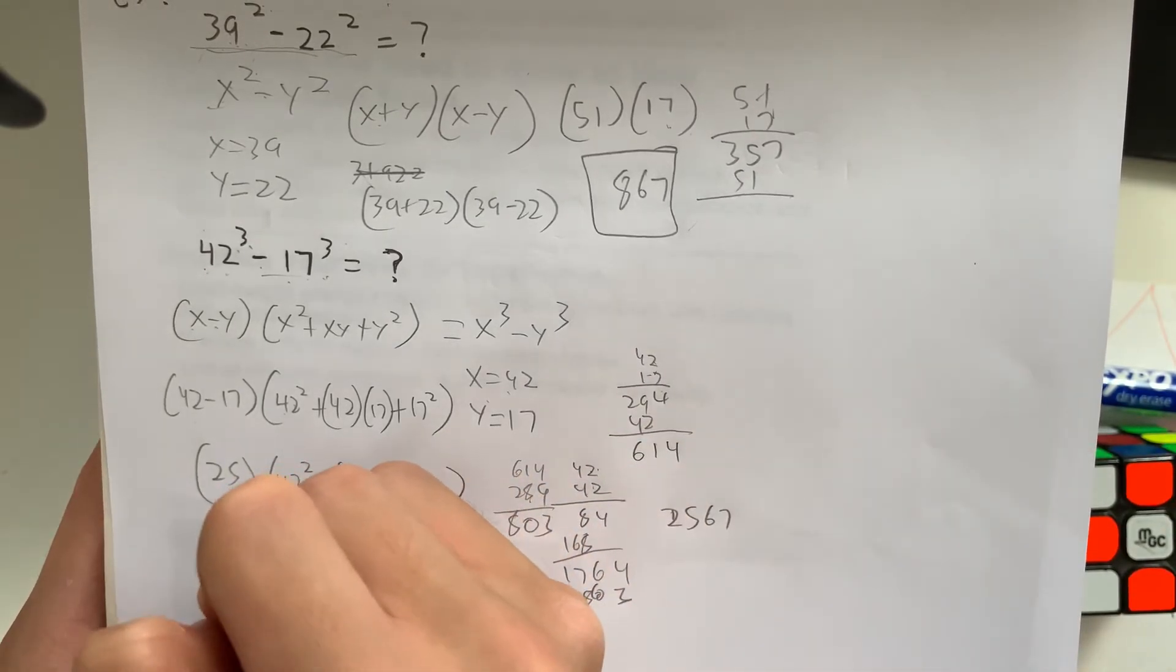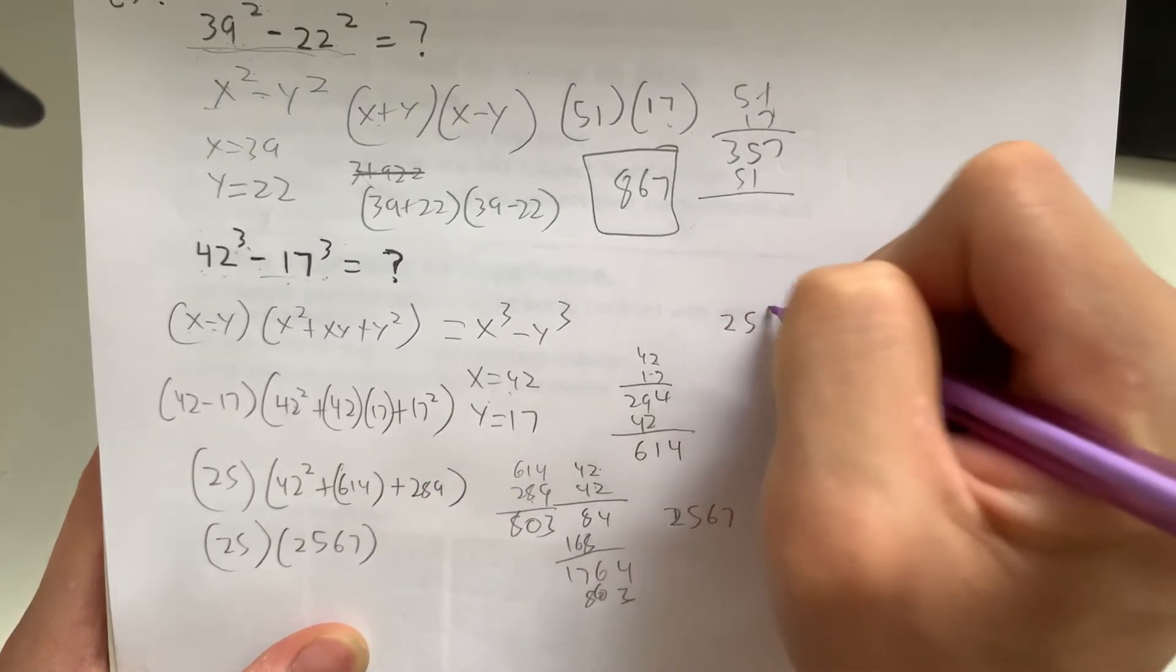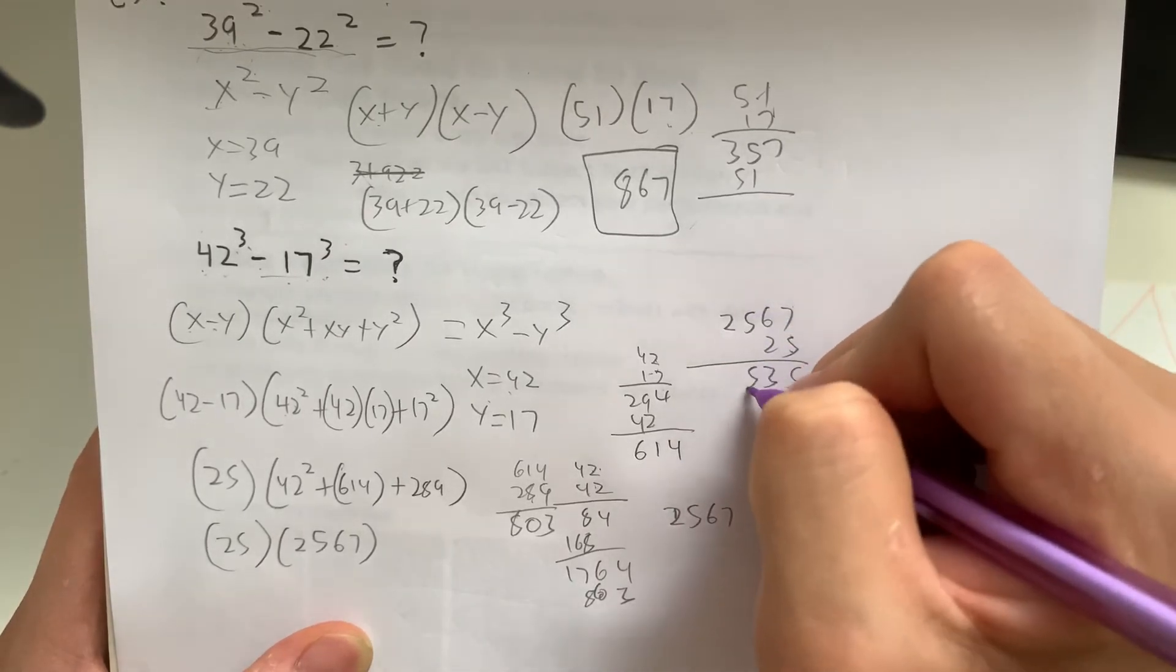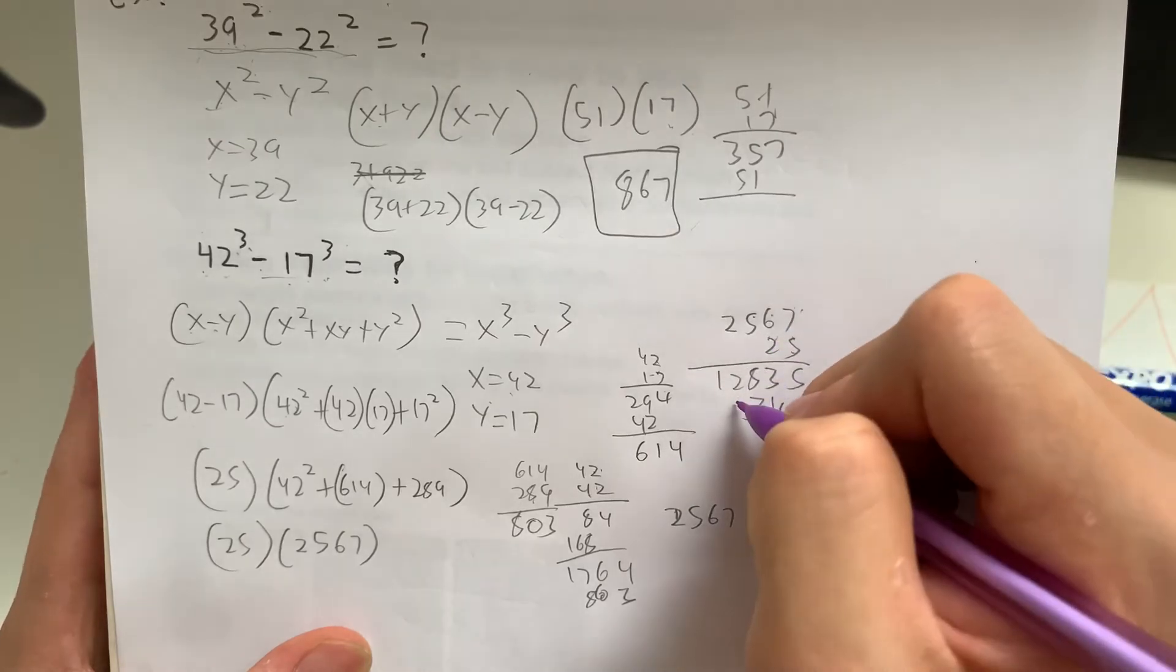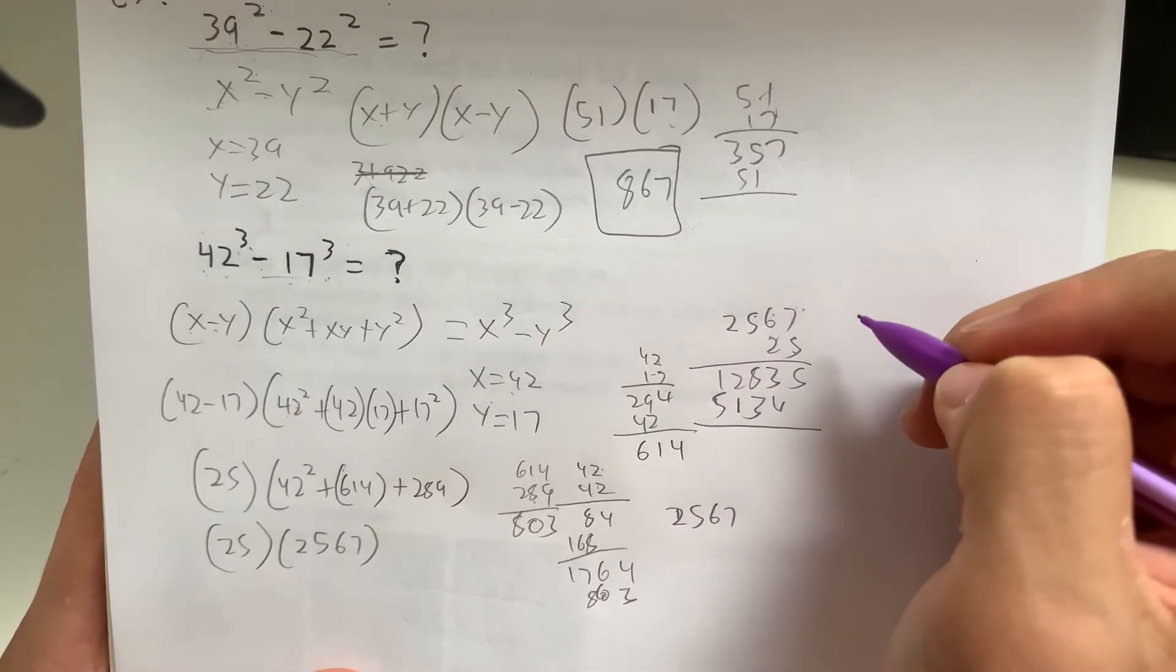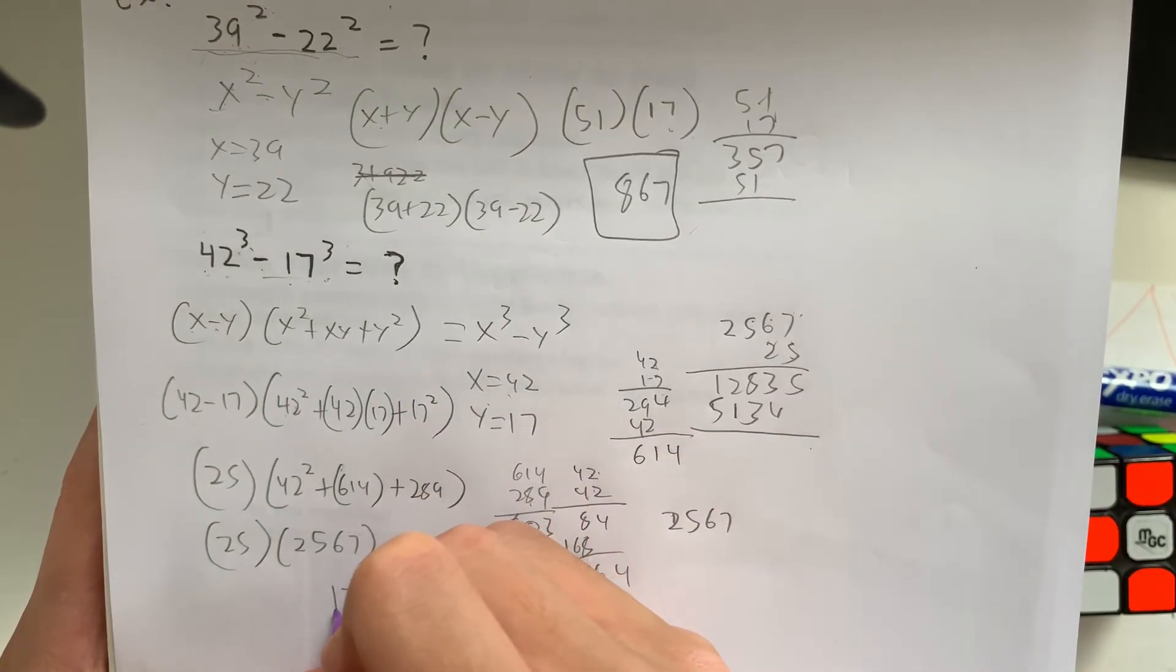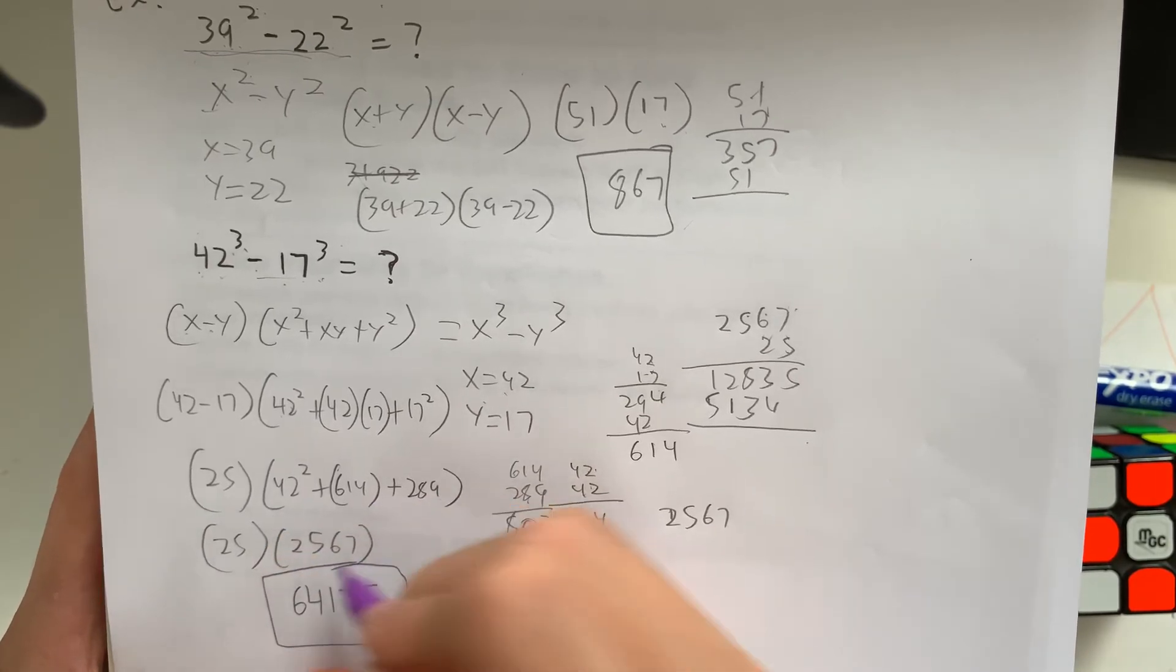So that equals 25 times 2,567. So what's that equal to? 35, 3, 28, 12, 14, 13, 11, 4. No, that's you get to 5. So our final answer is going to be 5, 7, 1, 4, 6. So that is going to be our final answer.